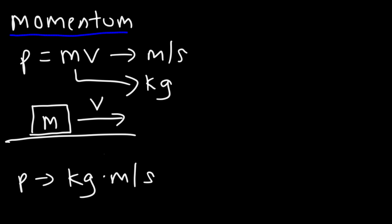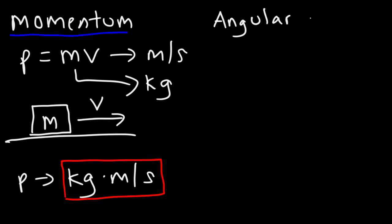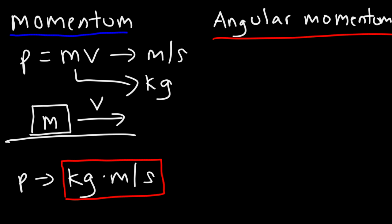So anything that's moving forward has a linear momentum. But what about angular momentum? Any object that rotates or revolves around another object has angular momentum. The equation for angular momentum is equal to the inertia of an object times its angular velocity.